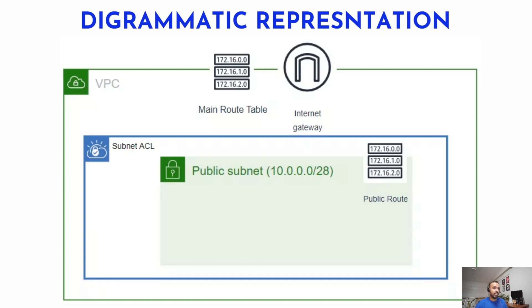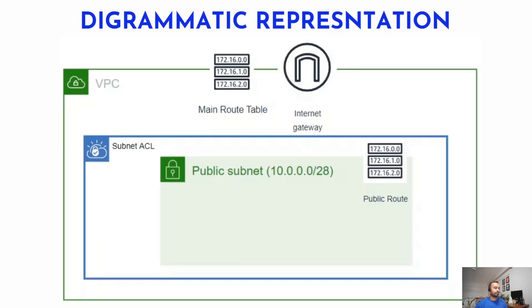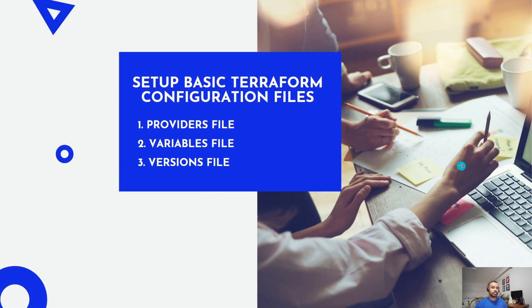So today what we are going to do is we are going to create a subnet ACL. The subnet ACL, also known as a Network Access Control List, is an optional layer of security for your VPC that acts as a firewall for coordinating traffic in and out of your subnet.